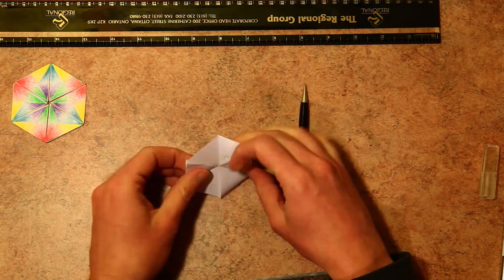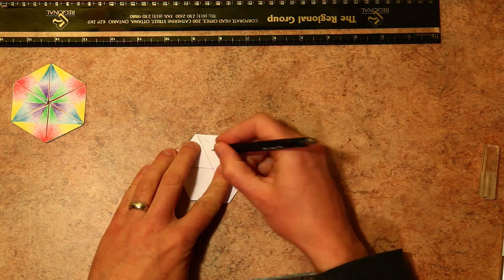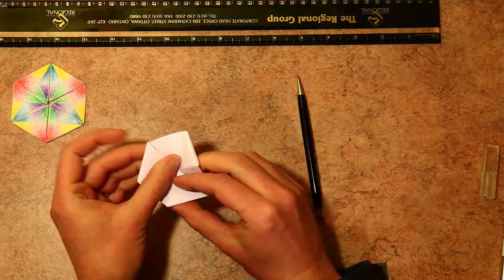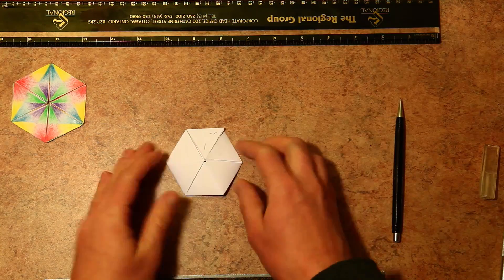Okay, so those two were pretty easy. If you haven't done so already, I recommend pausing the video and building yourself a trihexaflexagon and a hexahexaflexagon just to make sure that you can do it and are familiar with the basics.